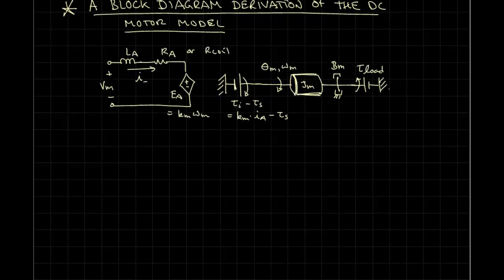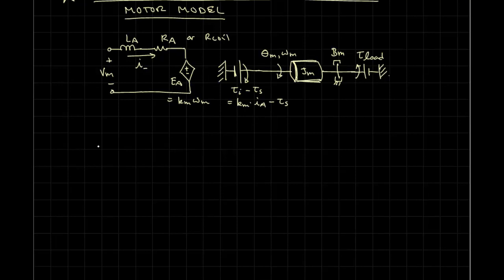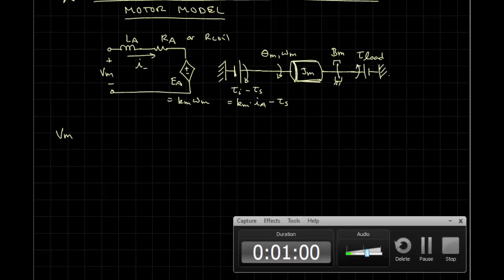And we'll begin by looking at the input side, which is going to be, in this case, we're going to claim that we apply a voltage Vm. That's going to be our input.